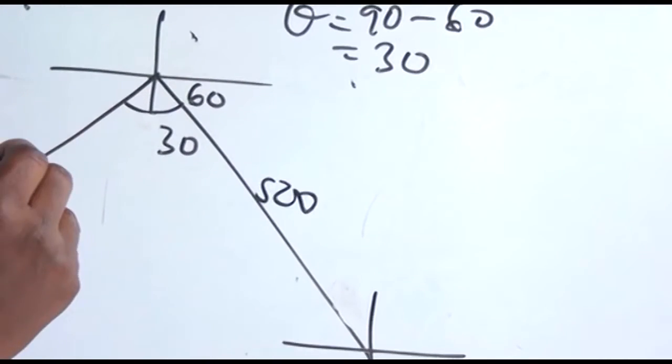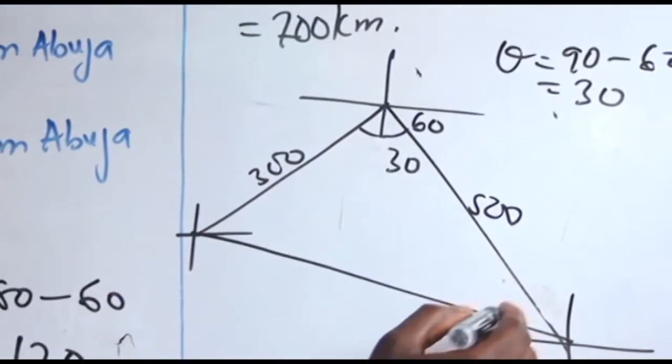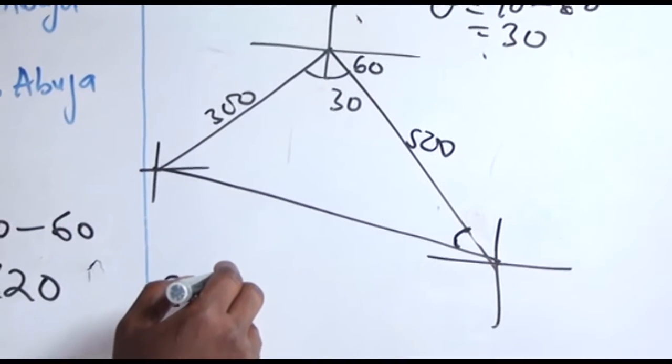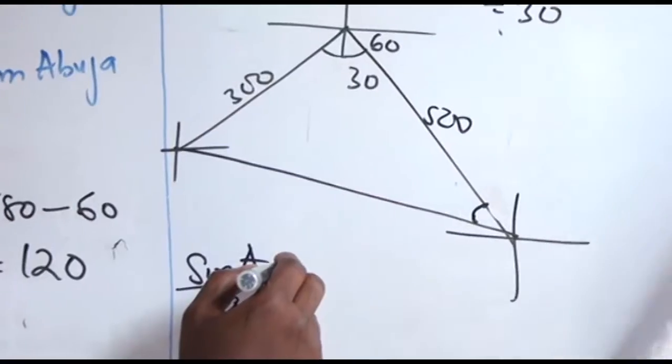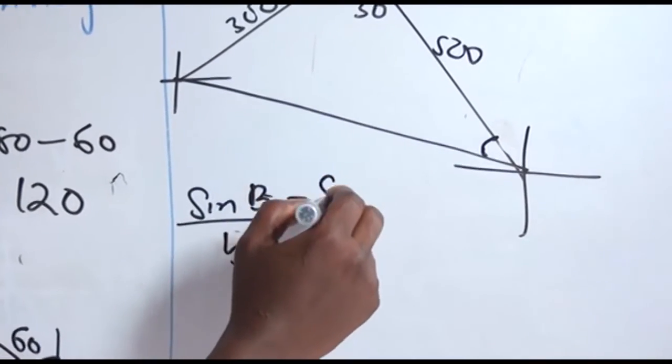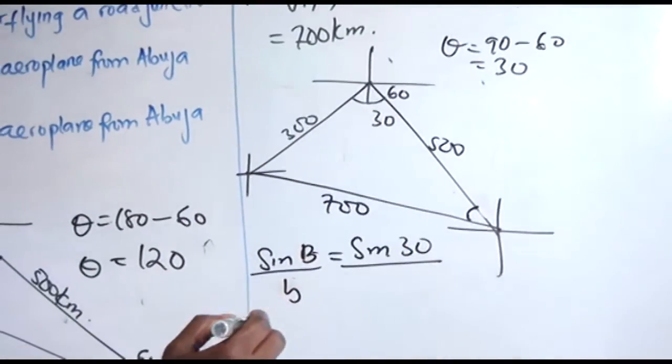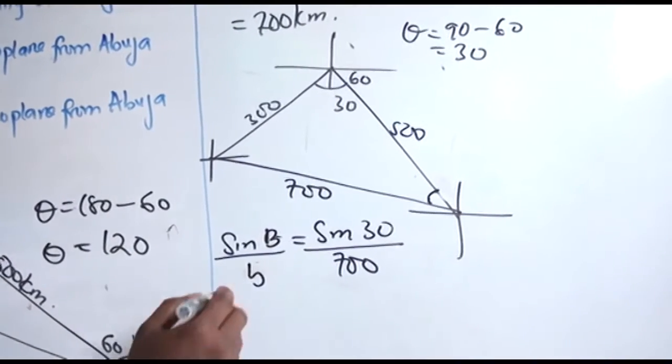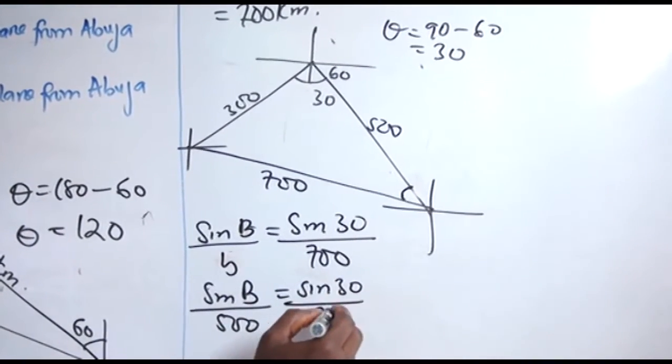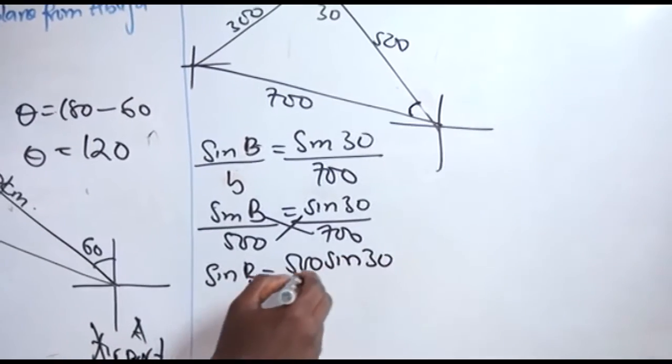Now here we have 500, while here we have 300. So I join both sides together. So we want to calculate the bearing of this, which is from this place. Let me say sine A over small letter a equals to sine B over small letter b equals to sine 30 over our distance, which is what? 700. So our sine B is unknown. Our small letter b is 500 equals to sine 30 over 700. By cross multiplication, we want to have sine B equals to what? 500 times sine 30 over 700.